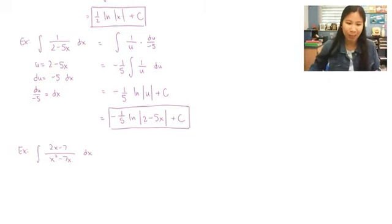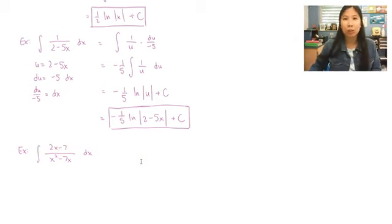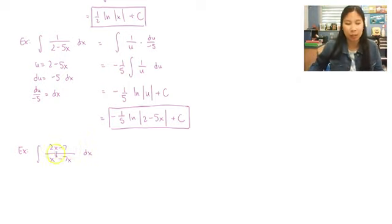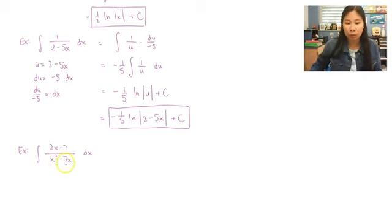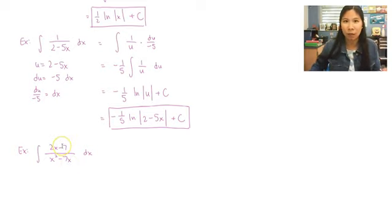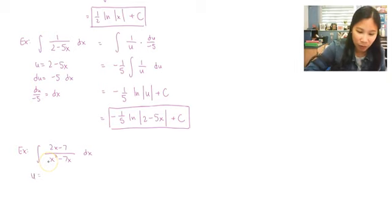Now for a more complicated fraction: the integral of (2x - 7)/(x² - 7x) dx. We'll still use u-sub. The key is that whatever we choose for u, its derivative should also appear elsewhere in the problem. The more complicated expression is x² - 7x on the bottom, and its derivative is 2x - 7, which appears on top. So we set u = x² - 7x.